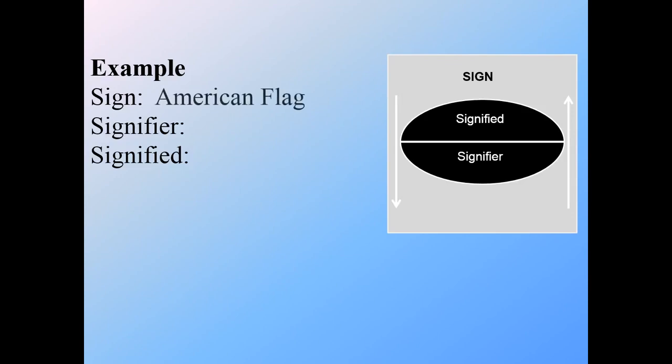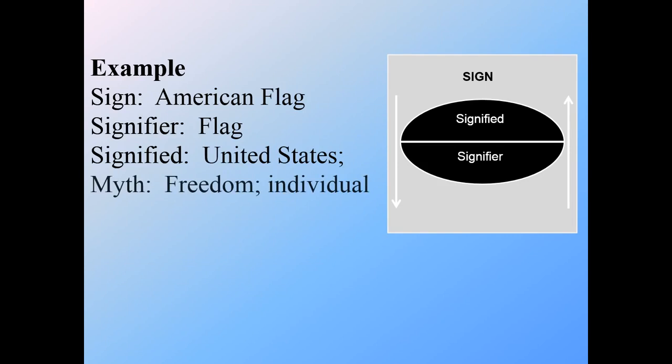Here's another example: the flag. The sign would be the American flag. The signifier is the actual flag itself — the physical item. The sign is that it's the American flag, and what's being signified is the United States. If we go to myth, the big picture that the flag is supposed to represent is, of course, freedom and individuality.